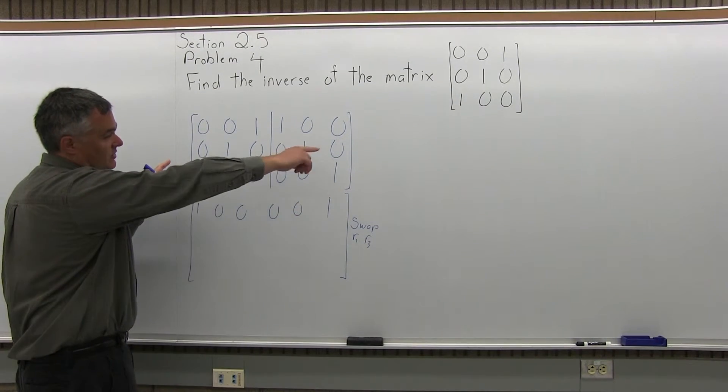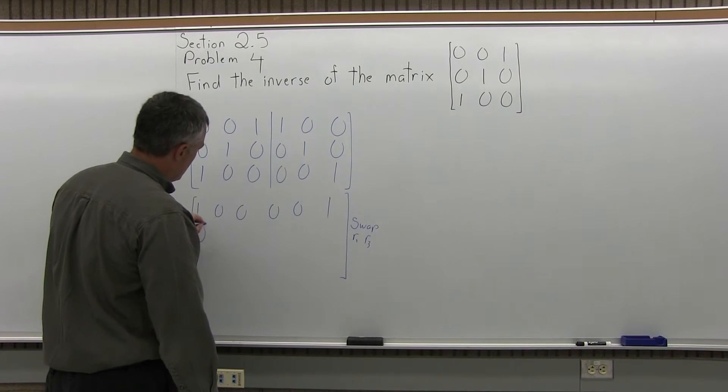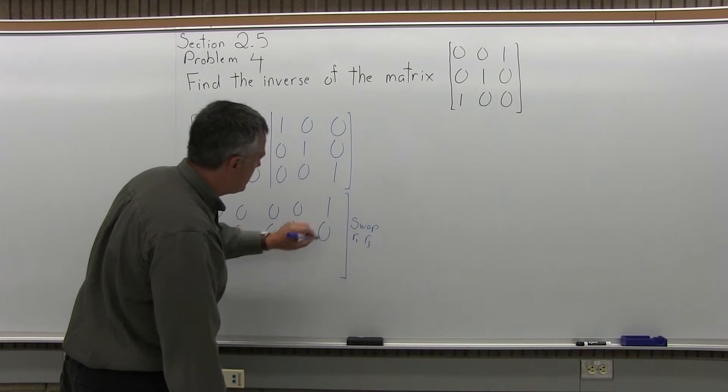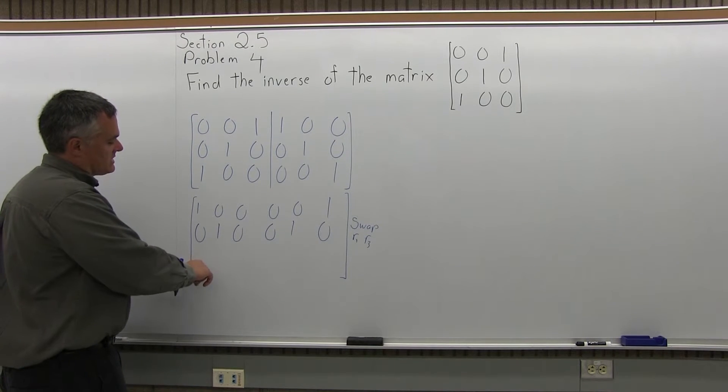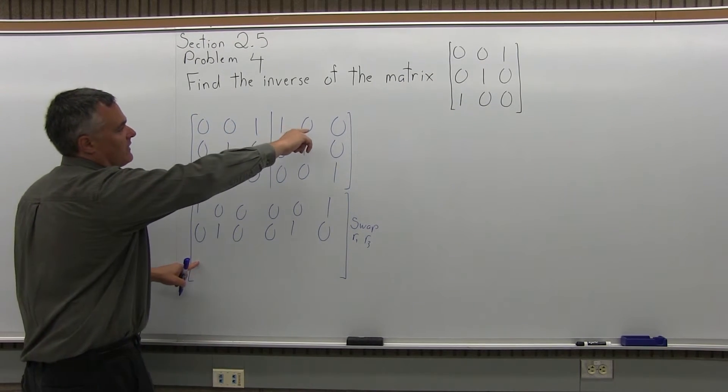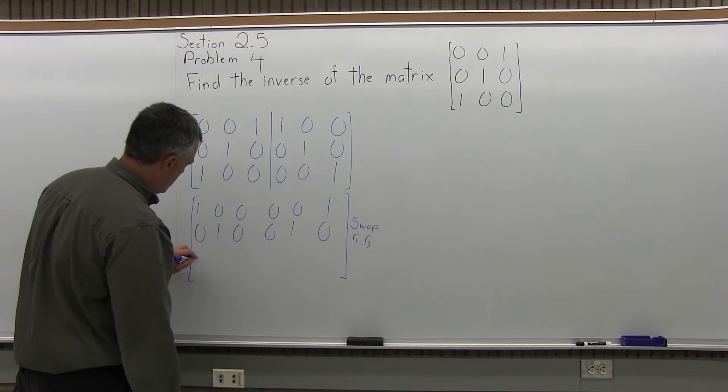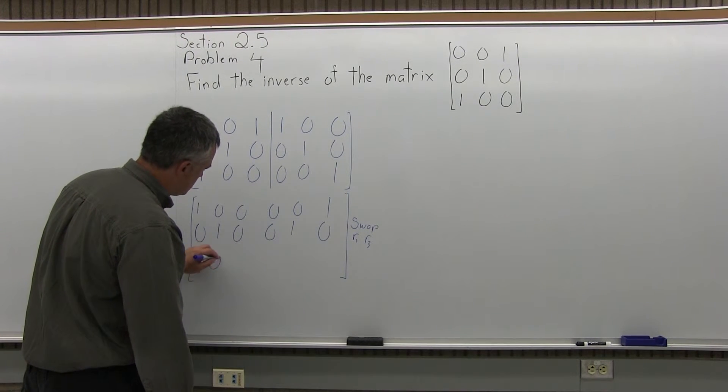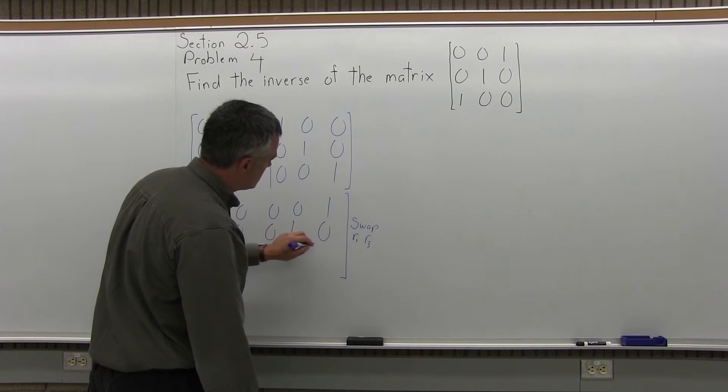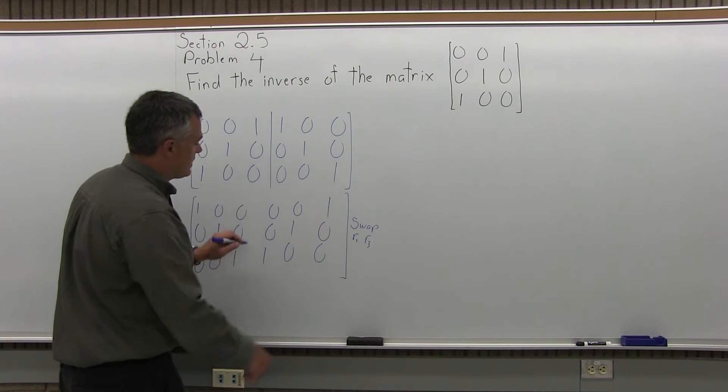The middle row can stay exactly the way it is, 0, 1, 0, 0, 1, 0. And now in the new matrix, the bottom row is going to be what was the top row in the first matrix. So my new bottom row is going to be 0, 0, 1, 1, 0, 0. So I have swapped row 1 and row 3.